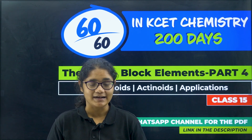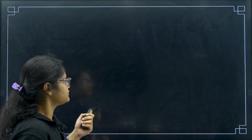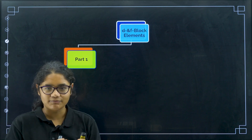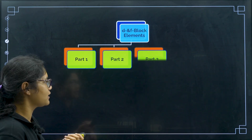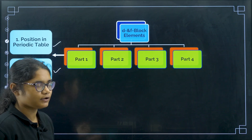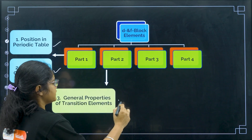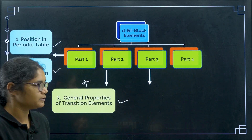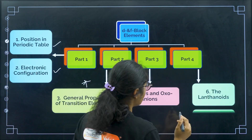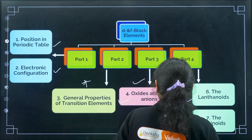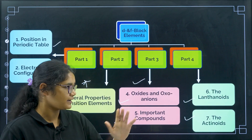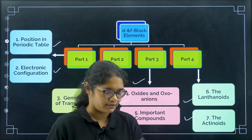So without any delay, let us get started. As I have already shown you many times, we are covering the D and F block in four parts. Part one is position and electronic configuration, which we have already covered. Part two is general properties — the major part from where many questions will be asked. Part three is oxoacids, and then we have part four: lanthanoids and actinoids, plus important compounds. Today we are covering lanthanoids and actinoids.